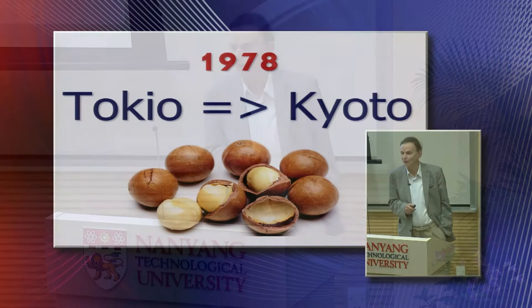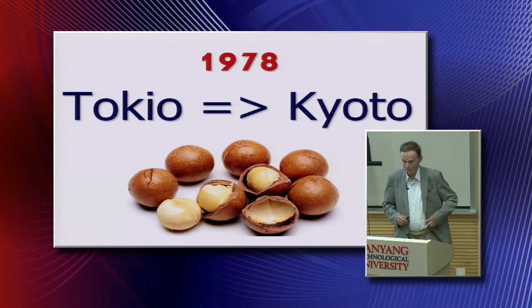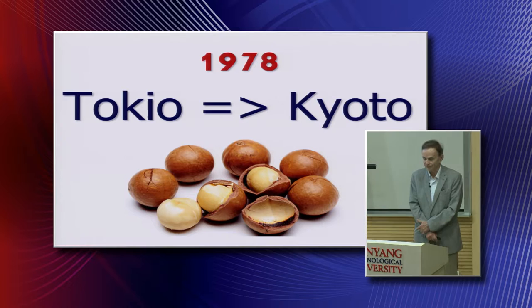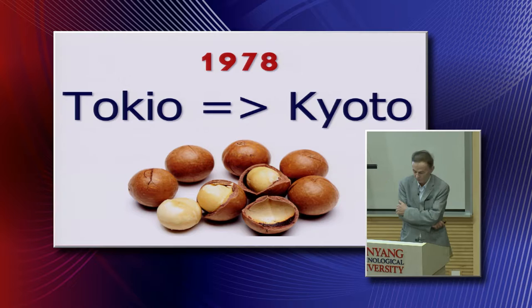One thing I'd like to mention in particular is in 1978 there was a big Rochester meeting at the Keio Plaza Hotel in Tokyo. I was there and Salam also, besides many others. After the Tokyo meeting, it turned out that both Salam and I were supposed to give lectures at a school organized by the Yukawa Institute in Kyoto.